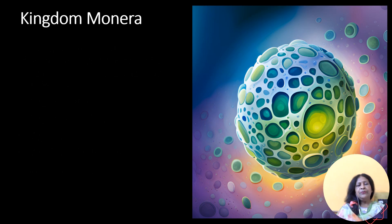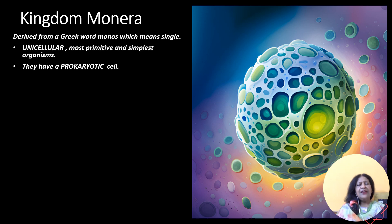Let's dive deeper into each of these kingdoms. Kingdom Munera, derived from a Greek word munos which means single. All organisms of this kingdom are single celled or unicellular, with most primitive and the simplest organisms on earth.